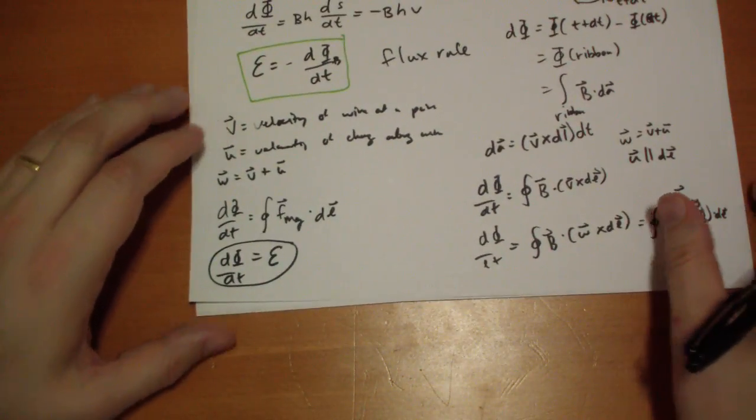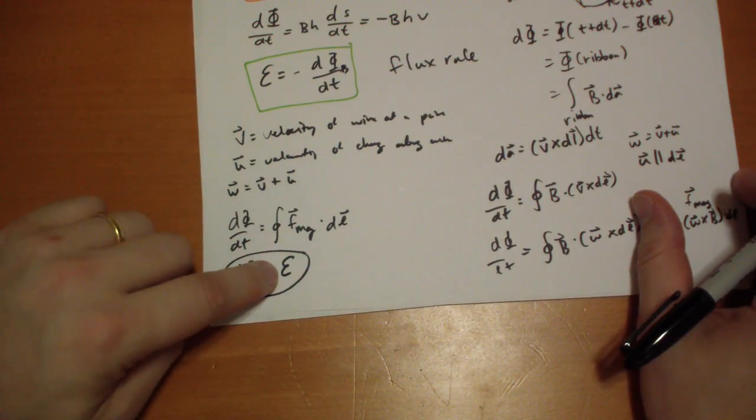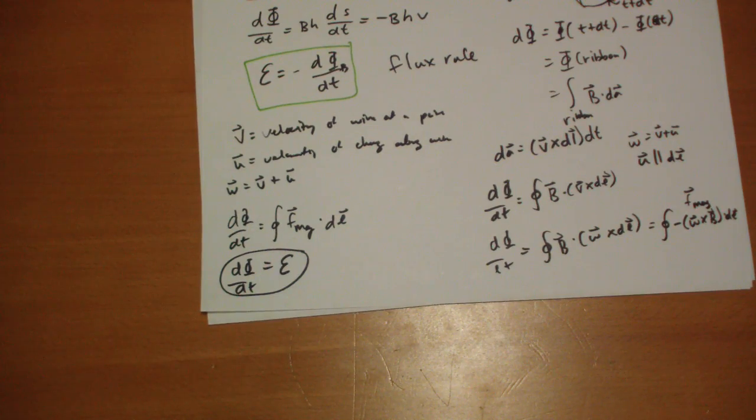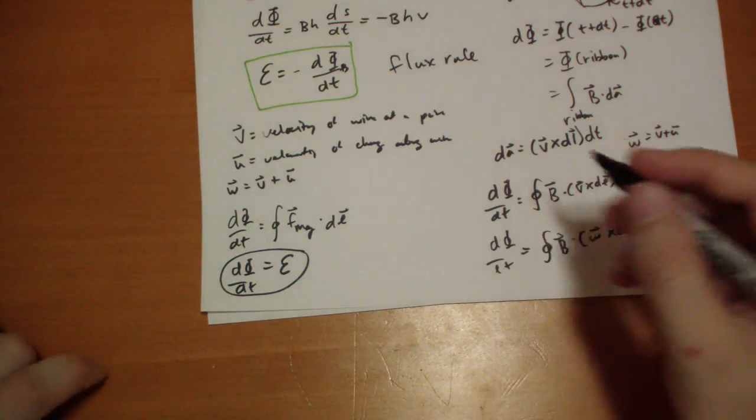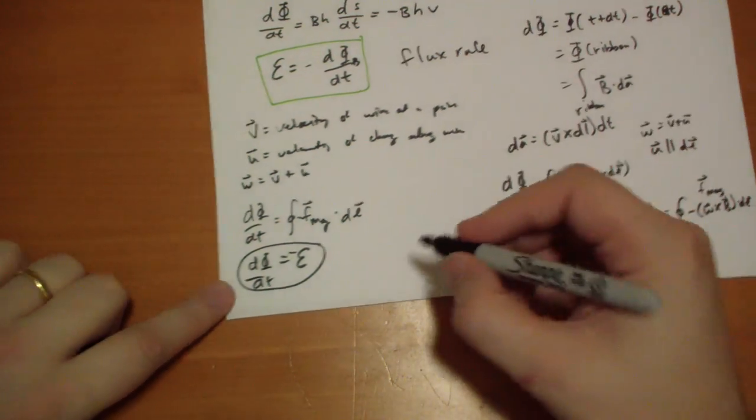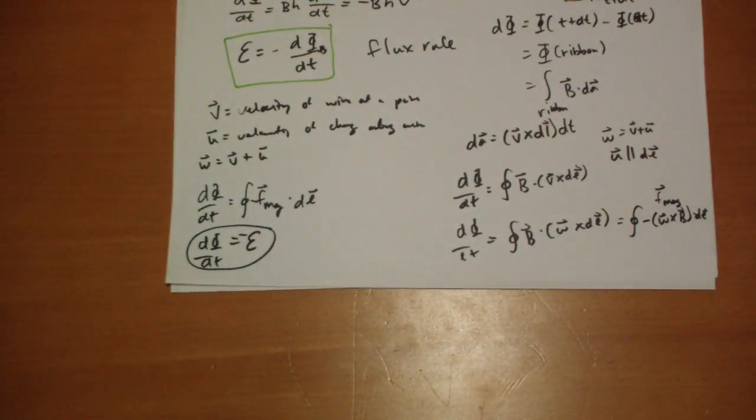So we've done it. We've proved conclusively that the change in flux over time is the same thing as the EMF of the loop. So we're done. Oh, we've got a negative sign. Negative EMF. So E equals negative the magnetic flux, or the change in magnetic flux over time.